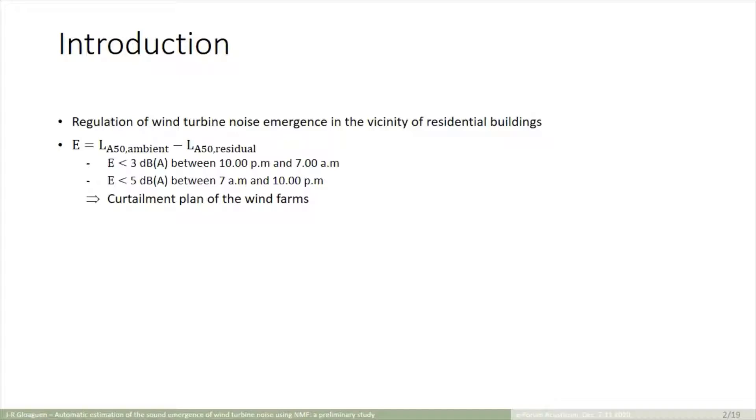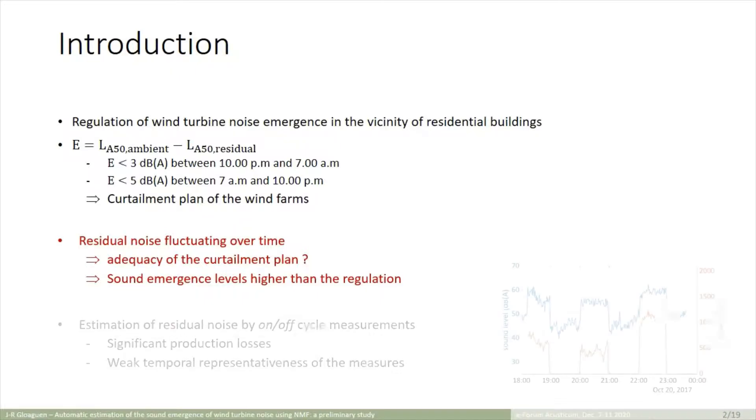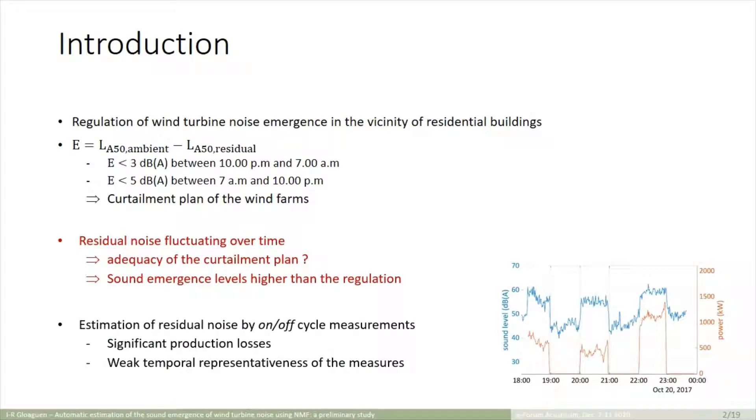To ensure to not exceed these thresholds, the operation of the wind turbines can be limited by a curtailment plant which limits the electric production. However, this residual noise fluctuates over time which may make the curtailment plant inadequate with either a regulatory threshold being exceeded or an overly restrictive plant resulting in more production losses. It is possible to update this plant with residual noise measurements by stopping the machine, but these measures generate new production losses and remain too punctual in time to be satisfying.